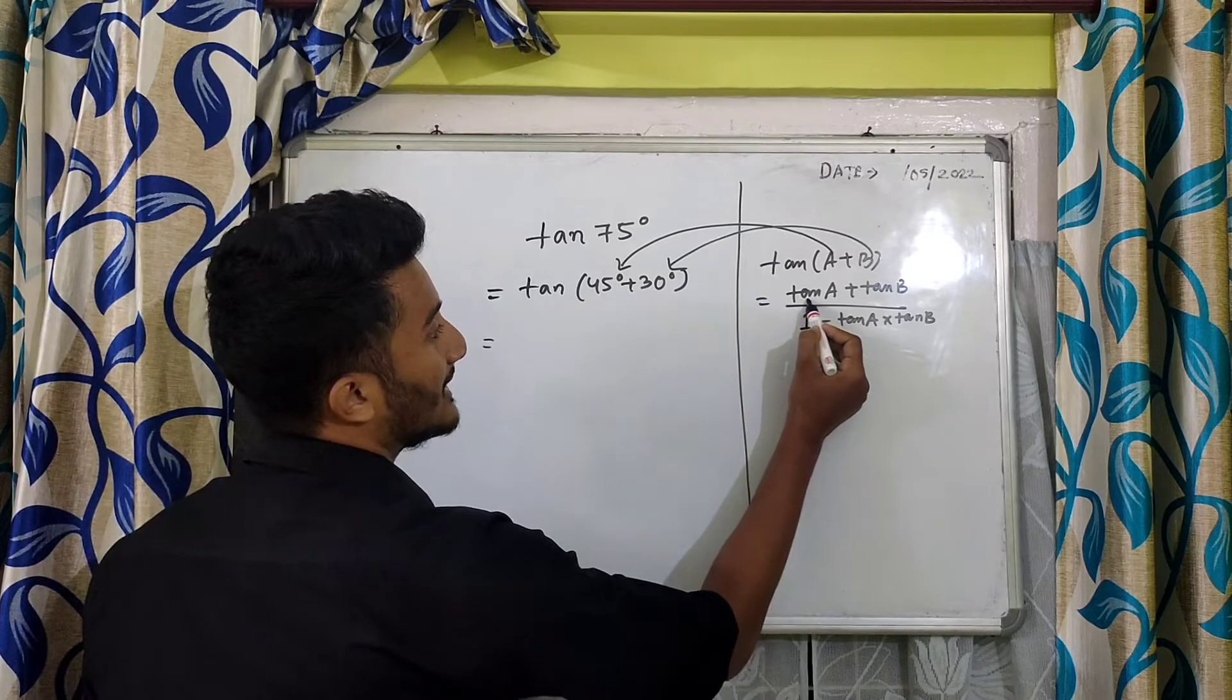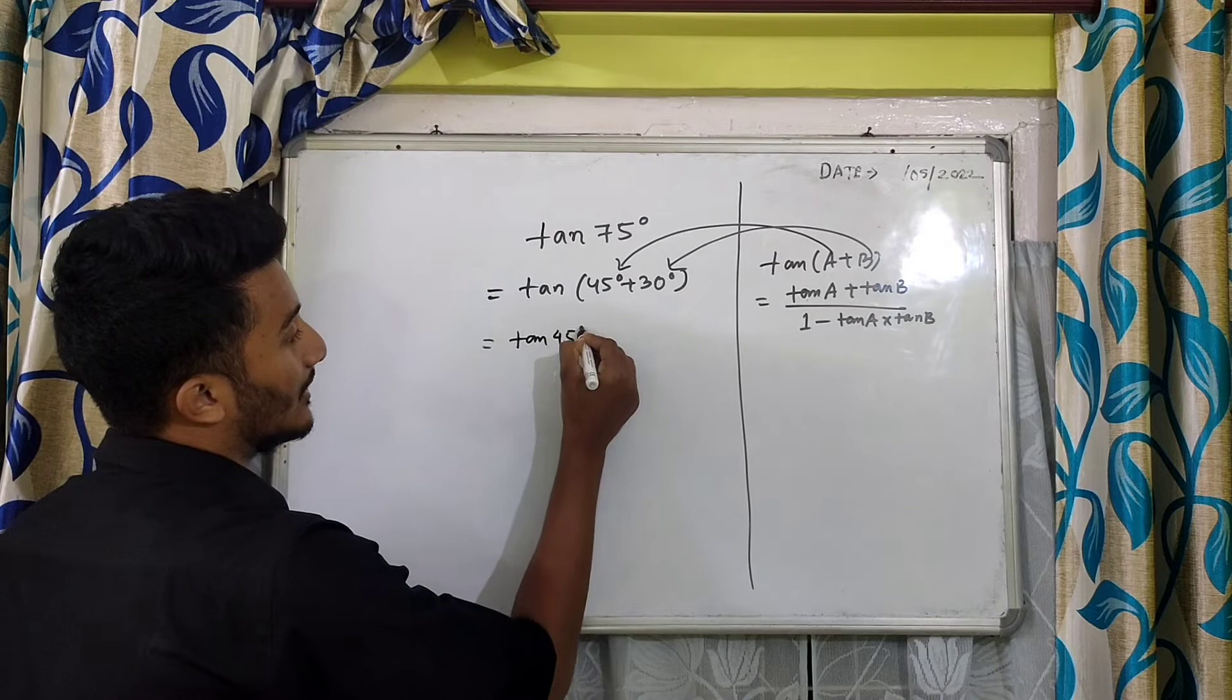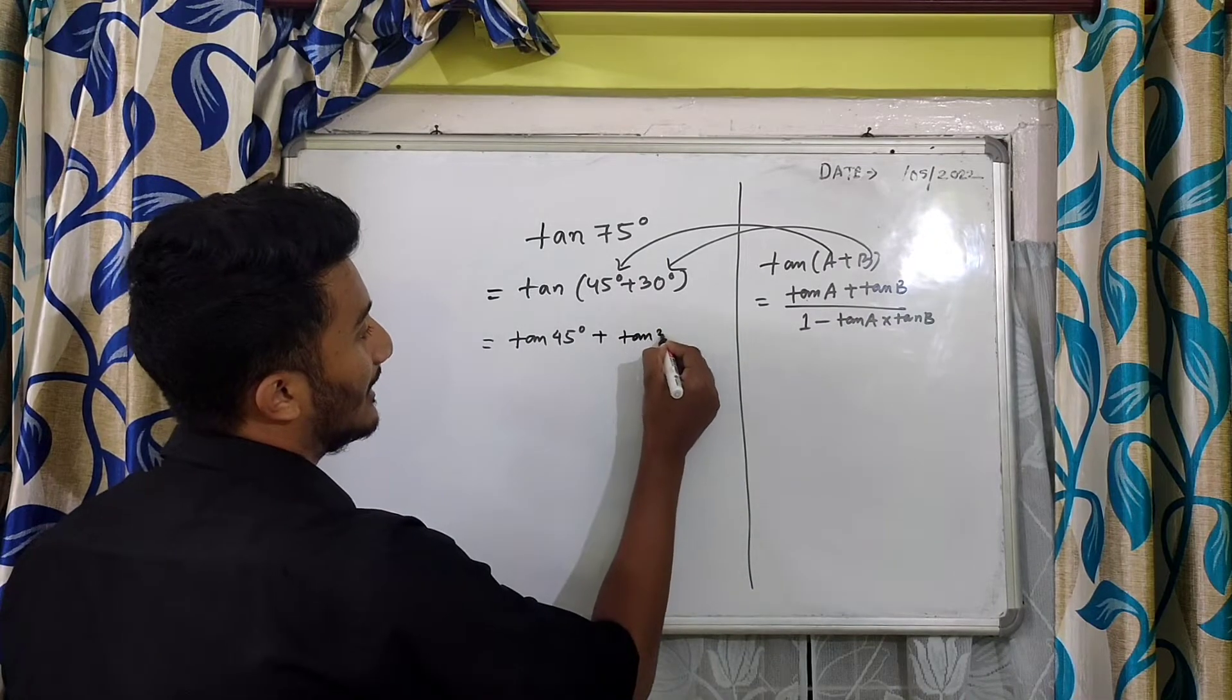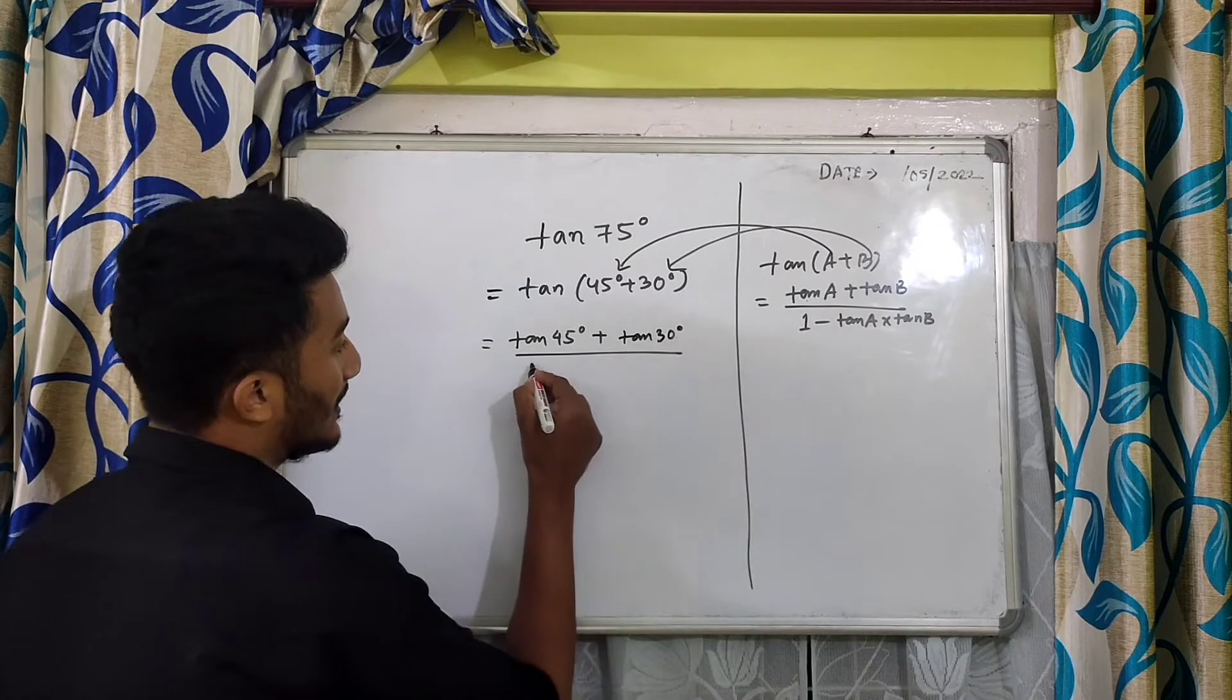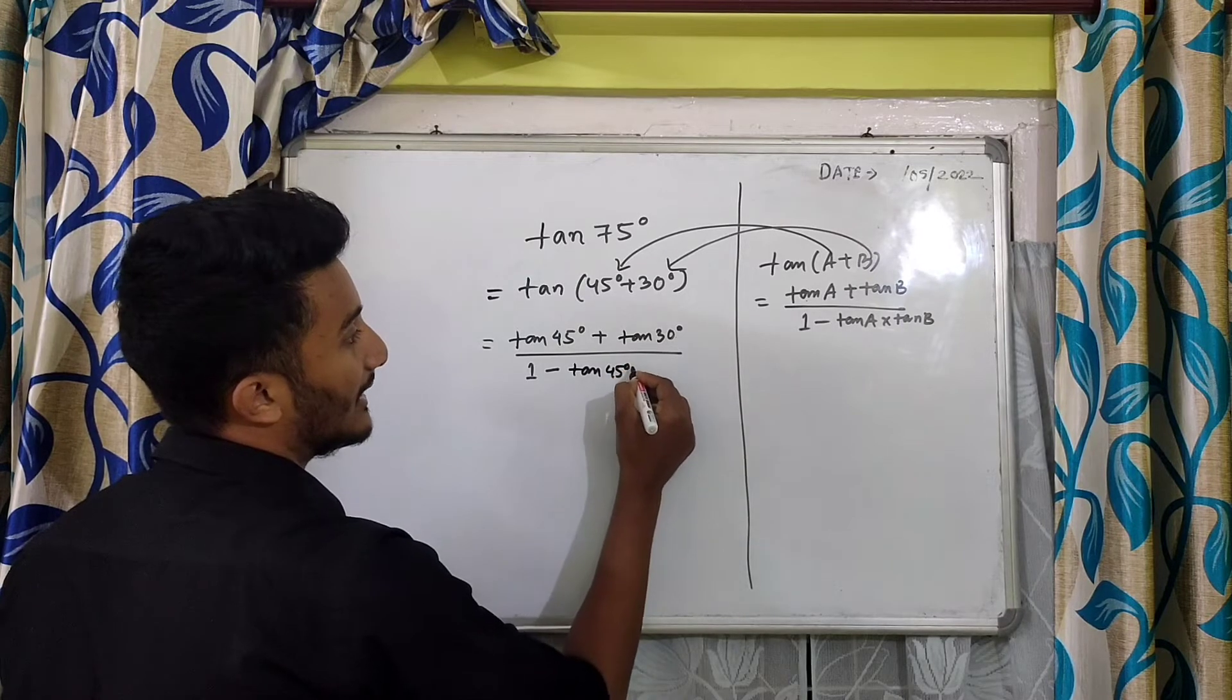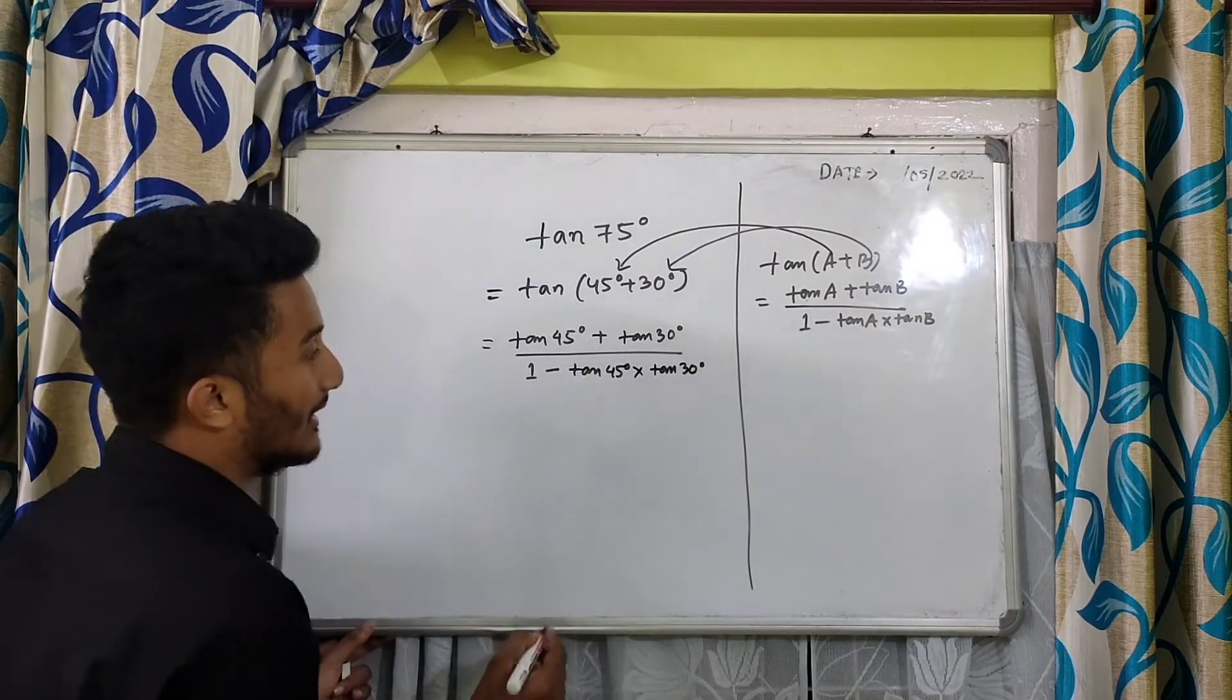So if we use the formula, in the numerator part of the formula there is tan a, so it will become tan 45 degrees, then plus will come here, and tan b means tan 30 degrees. In the denominator, there is 1, so we write down 1 minus tan a, then tan 45 degrees, into tan b, that is tan 30 degrees.